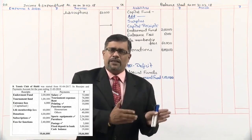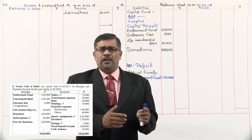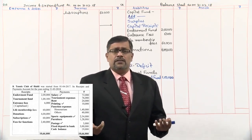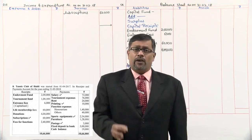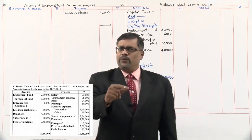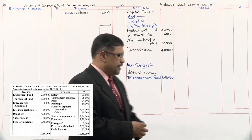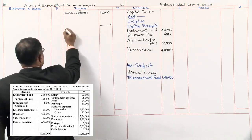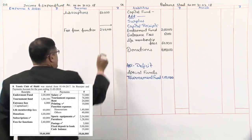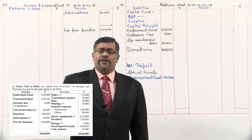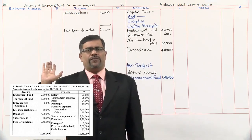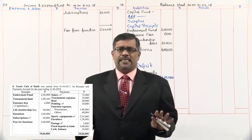Next, fees from functions. Functions are organized by the organization every year or every quarter, so any fees received from functions are always revenue in nature — recurring in nature. We'll record that as a revenue receipt in the account. We'll take it in the inner column — 2 lakh 40,000 — and check later whether there are any function expenses, because if there are expenses we can minus them. That's all on the receipt side.